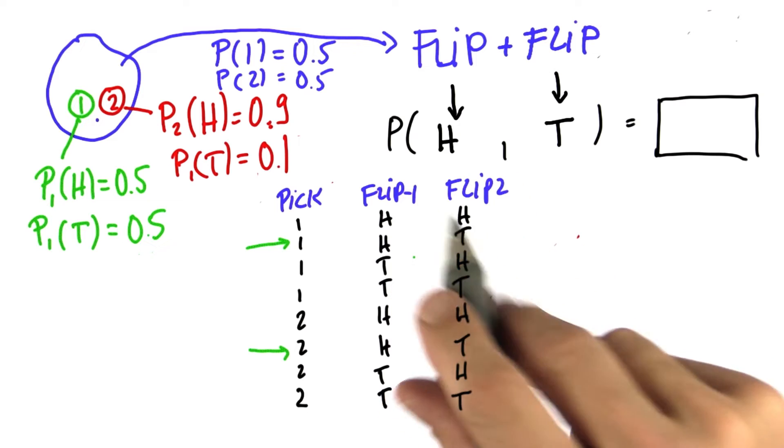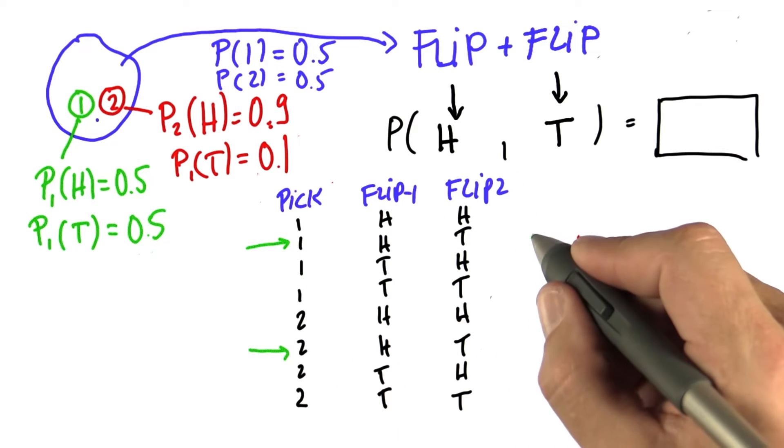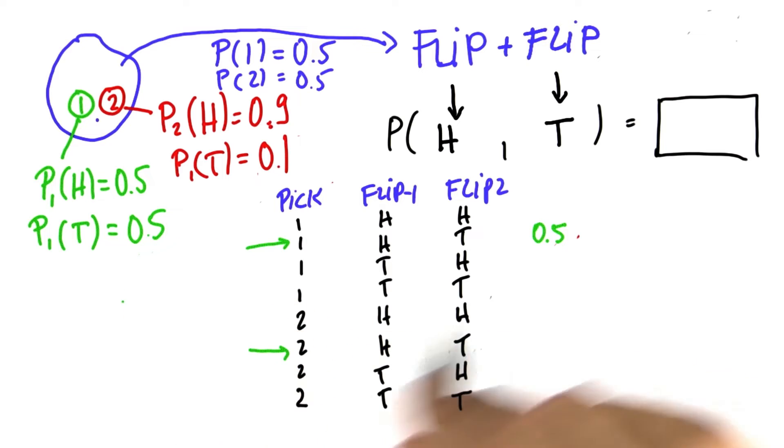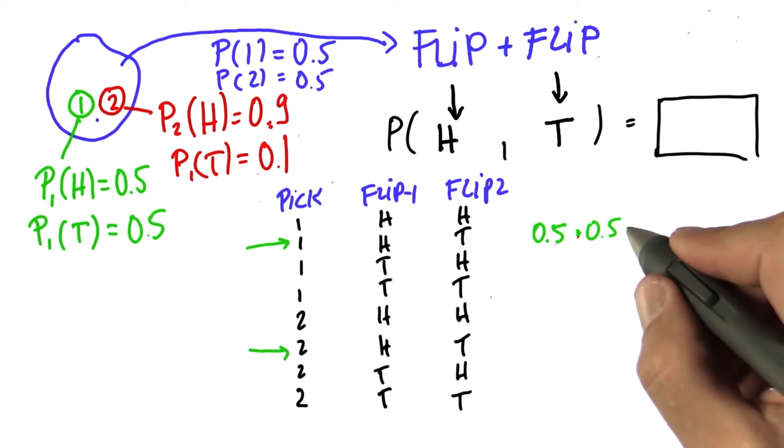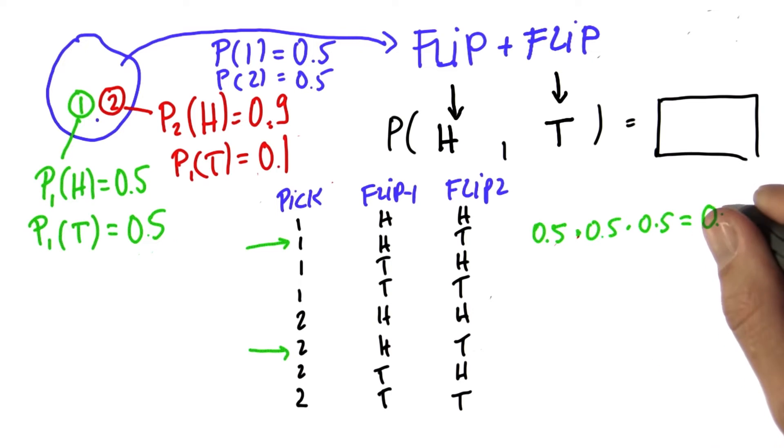So let me compute the probability for those two cases. The probability of picking coin number one is 0.5. For the fair coin we get 0.5 for heads followed by 0.5 for tails. That together is 0.125.